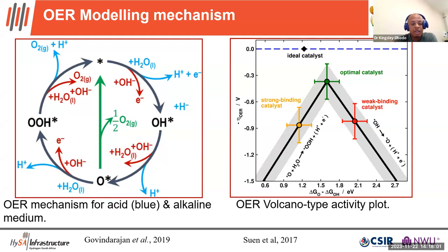A scaling relation was developed, resulting in a volcano-type plot where the overpotential is plotted as a function of the Gibbs free energy of oxygen minus the Gibbs free energy of the hydroxy group. An ideal catalyst should be around zero. Several studies have shown this scaling relationship is broken for some systems, but generally this volcano-type plot is used to understand the mechanism of the reaction.